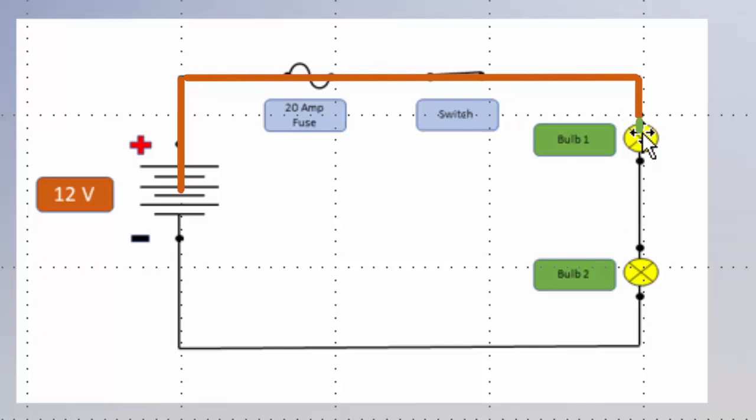The load part would be from here to here. This is the area of the circuit where we would expect all of the voltage to be used up.